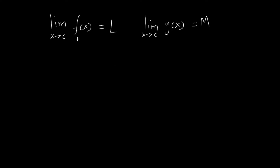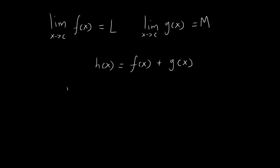In this video, we have two functions f and g, which both have limits as x tends towards c, equal to l and m respectively. I'm going to define a new function h, where h of x is equal to f of x plus g of x. What I want to show is that the limit as x tends towards c for h of x is equal to the sum of these two limits, l plus m.